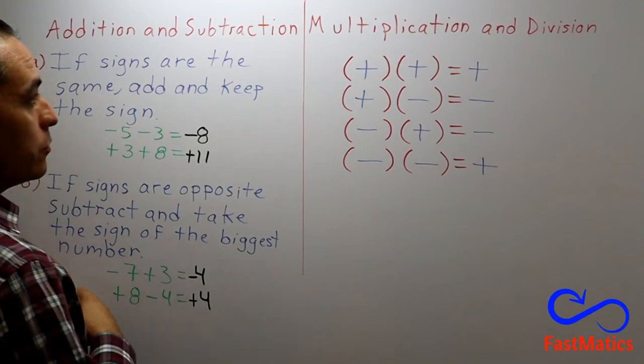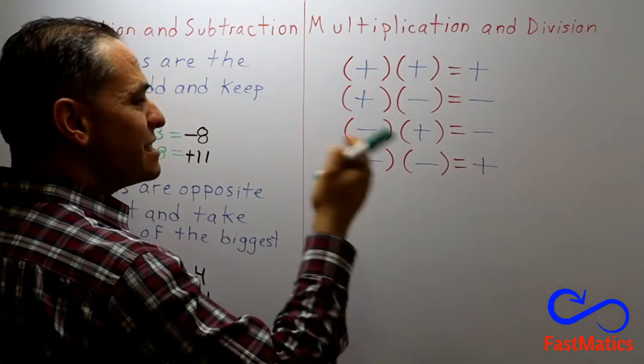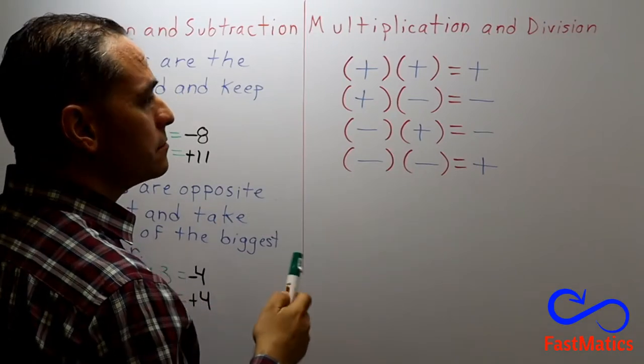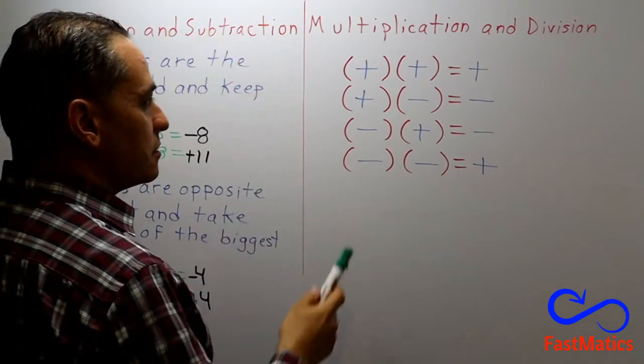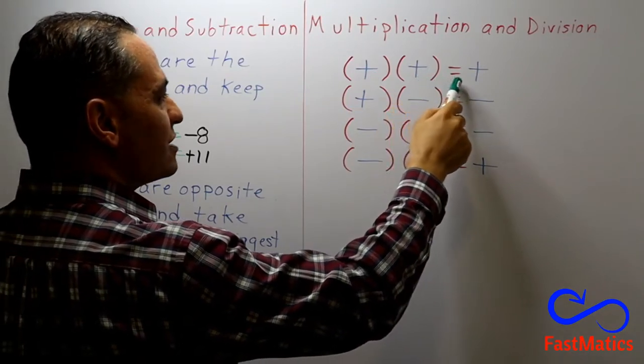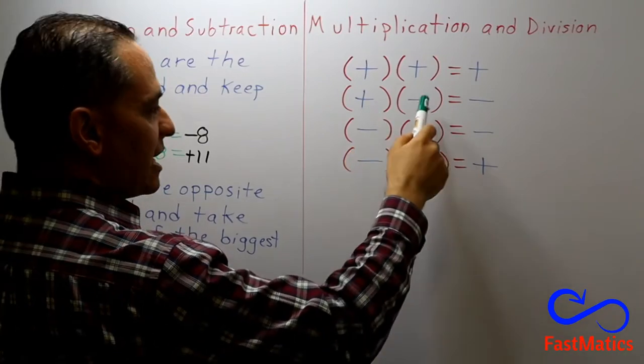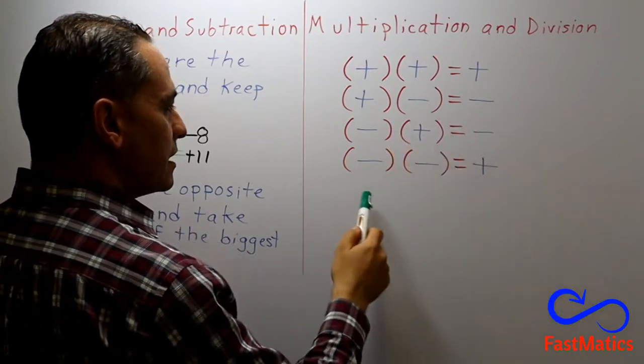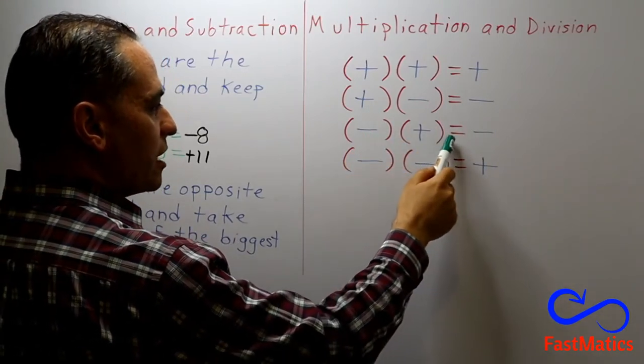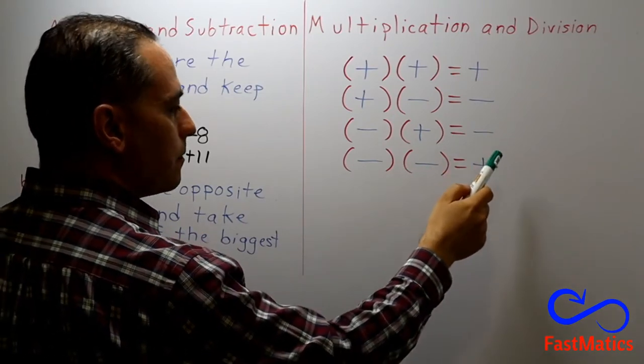After that, we're going to see that for multiplication and division is maybe simpler. Let's start. Positive multiplied by positive equals positive. Positive by negative equals negative. Negative by positive equals negative. Negative by negative equals positive.